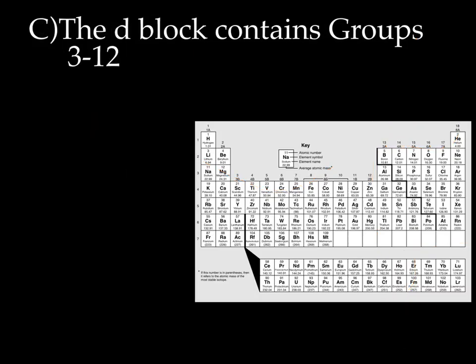Next we have the D block. The D block is this area right here. And for the D block, we can't exactly say that the valence electrons end in d, because these poor guys can never be valence. Let me show you that real quick.